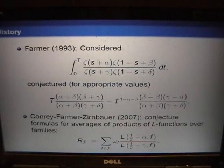The L-function ratios conjecture starts back in 1993, when David Farmer considered integrals of ratios of the zeta function on the critical line. He conjectured, for appropriate values of the parameters, a form for the answer.